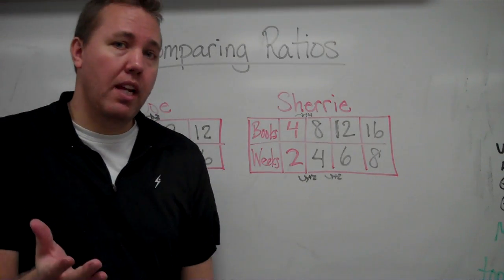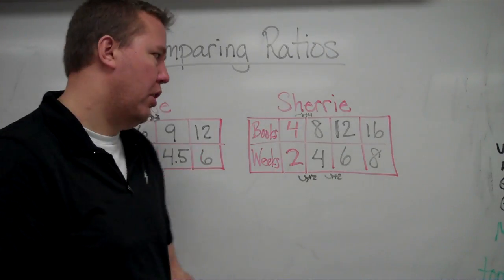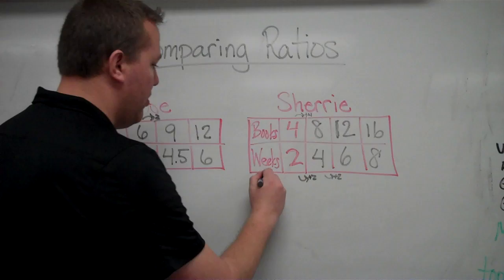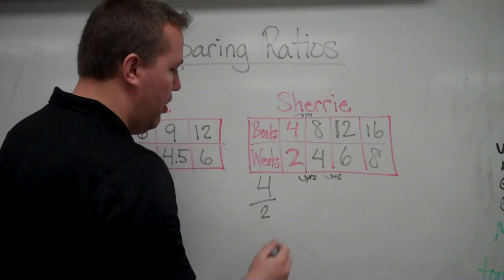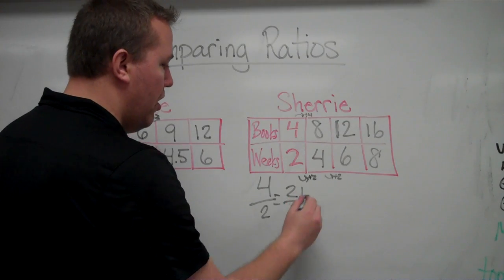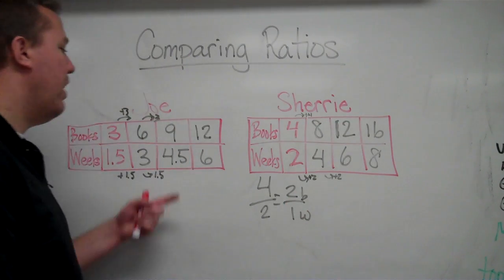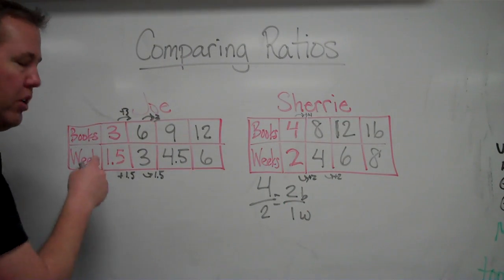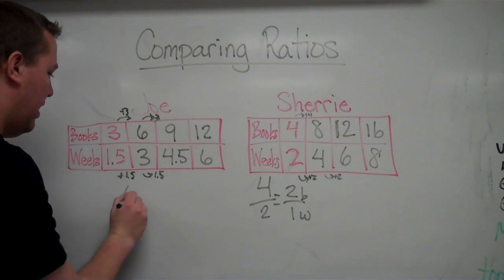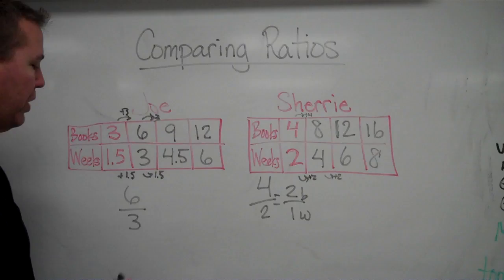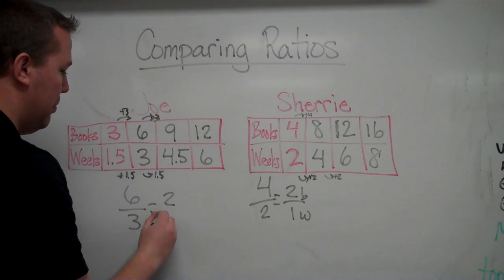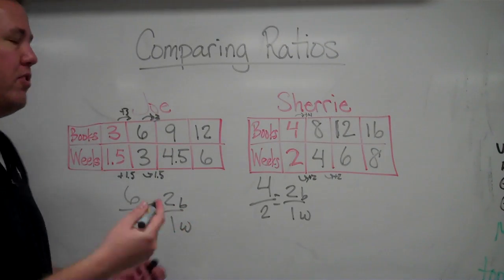If we wanted to throw in a unit rate, that is something that we could do pretty quickly. Four books for every two weeks, write that as a ratio, four to two, and just simplify that, which equals two books for every one week. And Joe is the same. I might come up to six and three. Six books for every three weeks, and that simplifies very easily to two books for every week.